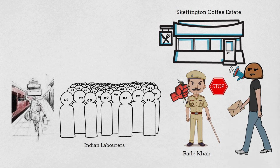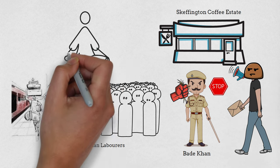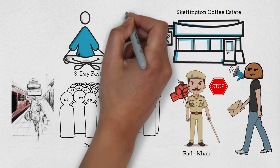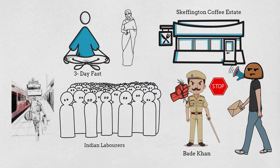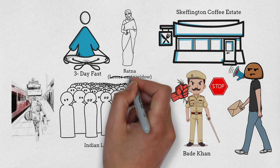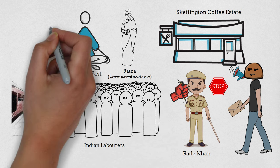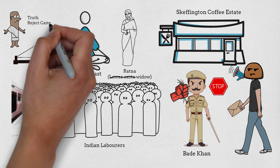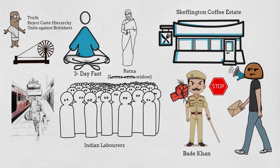The laborers present get angry at Bade Khan and beat him. Moorthy finds this very discouraging — followers of Gandhi cannot be so violent — so he goes on a 3-day fast. While he fasts, a widowed Paria girl named Ratna starts caring for him. Moorthy, a Brahmin, is now breaking the myth of untouchability. He convinces many villagers to spin the wheel and follow the Gandhian way of life: speak truth, reject caste hierarchy, and stand against the Britishers.